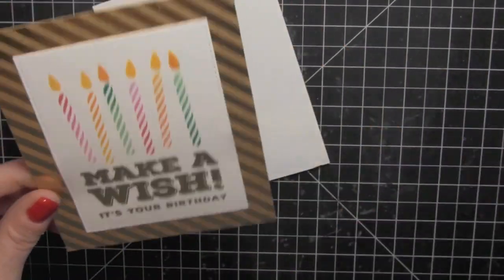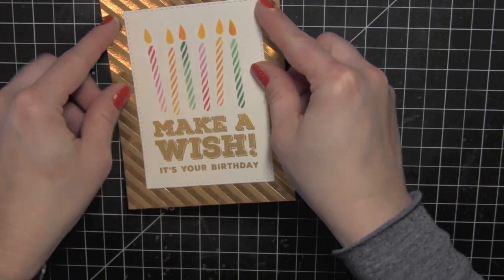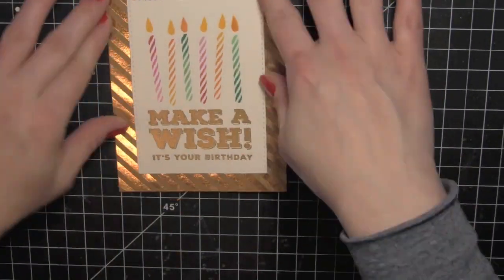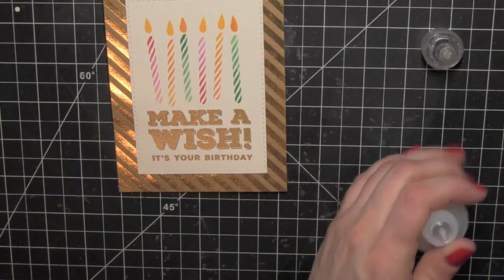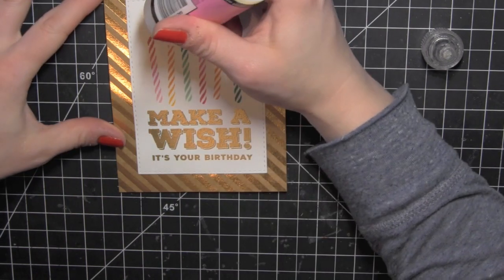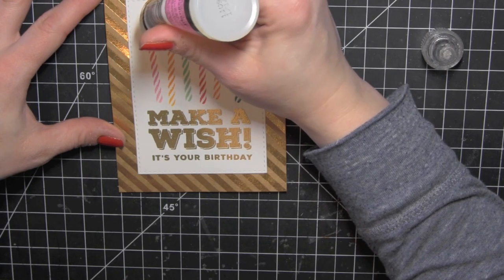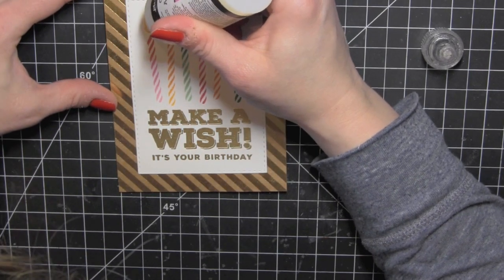Then I'm going to adhere this panel to my card base, also created from some of the cardstock in the card kit. Now this looks beautiful just as is, but I am going to go ahead and take some glossy accents and apply that to the top of each of the candles just to give it a little bit of gloss there. It's a fun little embellishment.